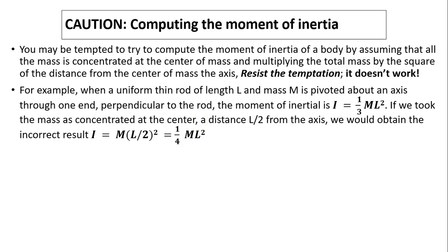Question: computing the moment of inertia. You may be tempted to compute the moment of inertia of a body by assuming that all the mass is concentrated at the center of mass and multiply the total mass by the square of the distance from the center of mass to the axis. Resist this temptation. It will not work. For example, in the last slide, we saw that a uniform thin rod of length L and mass M pivoted about an axis through one end perpendicular to the rod has moment of inertia of 1/3 ML squared. If we took the mass as concentrated at the center, that would be distance L over 2 from the axis. You would get I equals M times L over 2 squared. That will become 1/4 ML squared, which is incorrect. Don't fall for that temptation. It will not work. You have to use the integral for continuous mass.